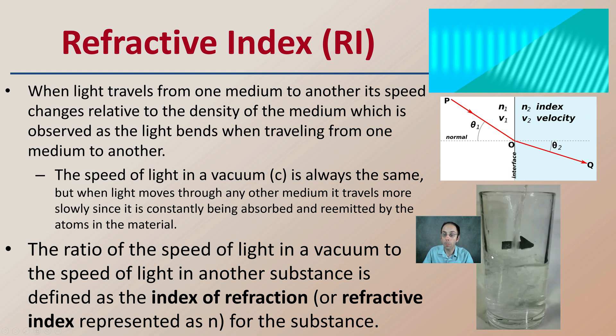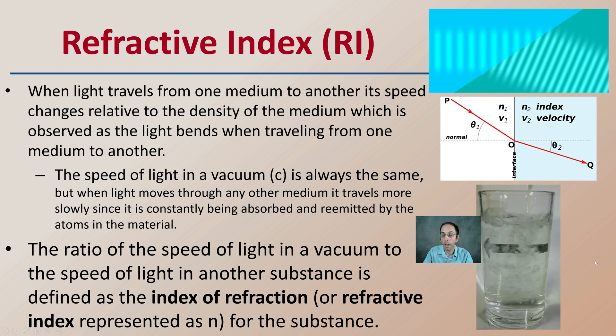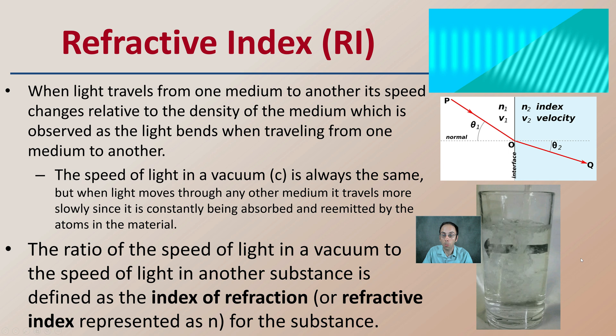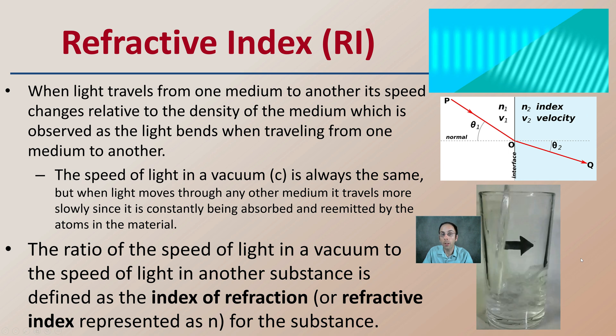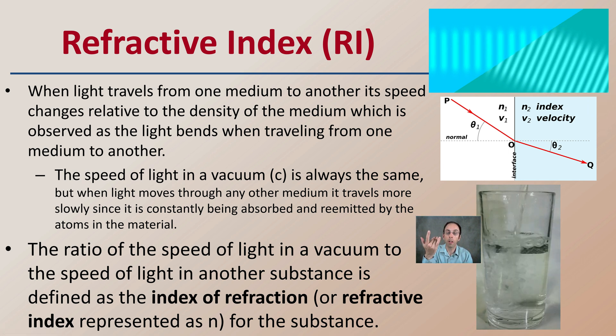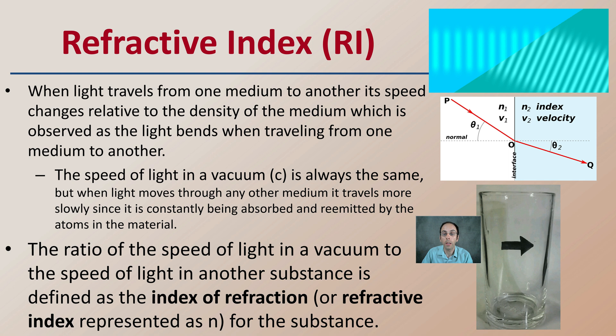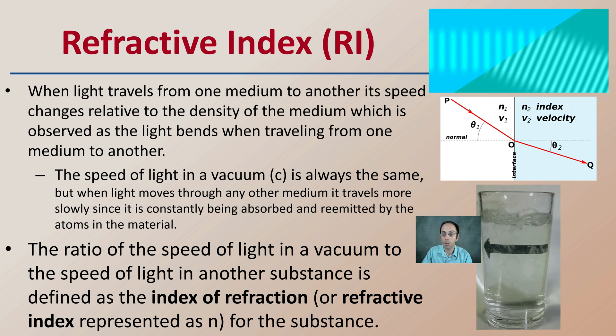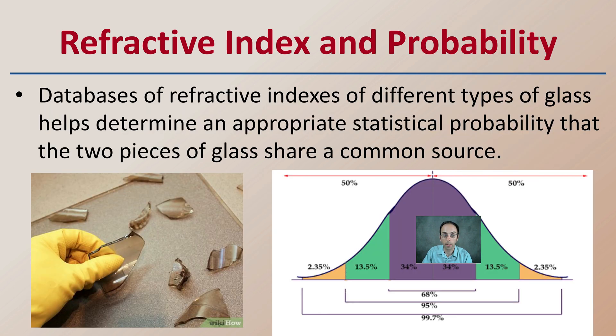Here's a neat experiment: we have a glass with a piece of paper behind it with an arrow pointing in one direction. We fill that glass full of water and the arrow actually flips direction because of a difference in refractive index.